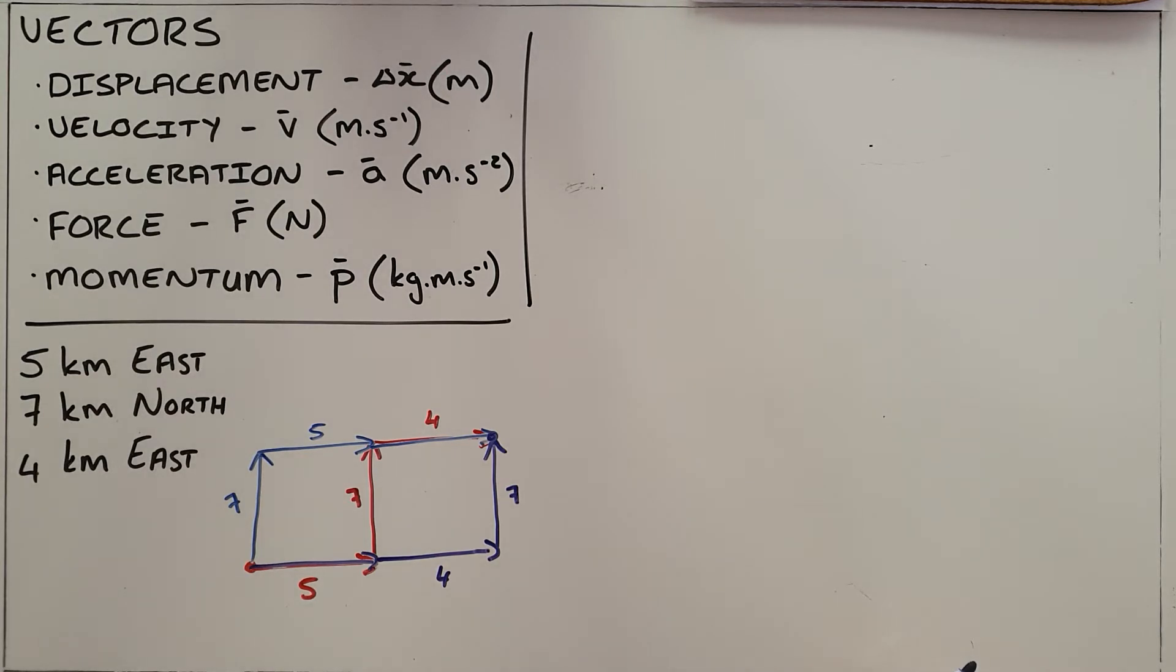The second common property of vectors or the second common use for vectors is that since they all start and end in the same place when they're added together, it is possible to determine what is called a resultant vector, meaning the one vector that could replace those other three vectors. In this case, that would be the one vector that goes from the starting point directly to the end point.